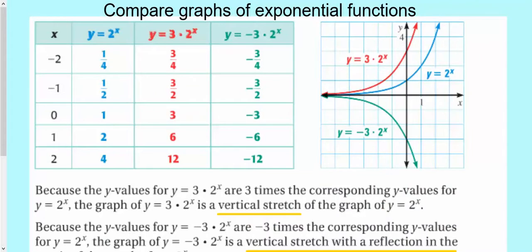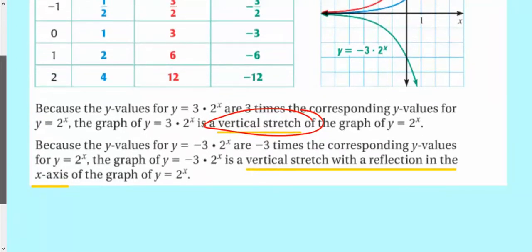So a few things that we've seen here, is there's the parent function. This one was multiplied by 3. This one was multiplied by negative 3. So when you're multiplying in equations, we've seen this before, the transformations, these are vertical stretches. And then this negative sign right there, that negative 3, causes a reflection in the x axis. Or I would say reflection over the x axis.